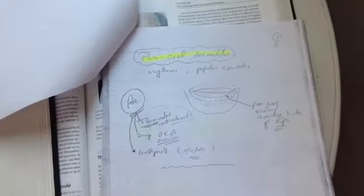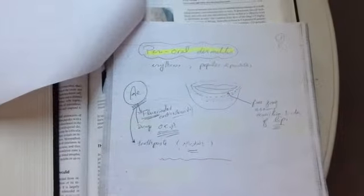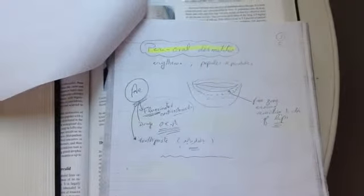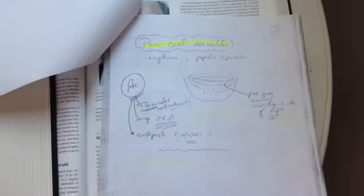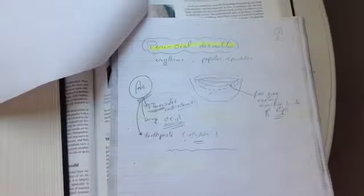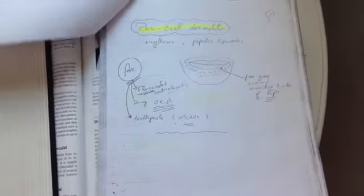Perioral dermatitis. There is erythema, papules, and pustules around the mouth with a free zone around the vermilion of the lip characteristic. The etiology usually is from fluorinated corticosteroids and drugs as oral contraceptive pills and toothpaste with fluoride, as we can see here and also in this picture.